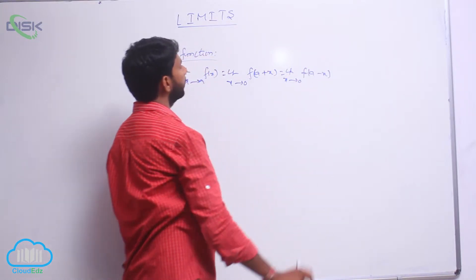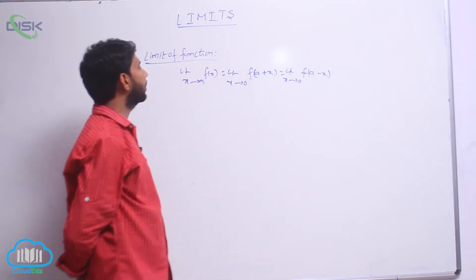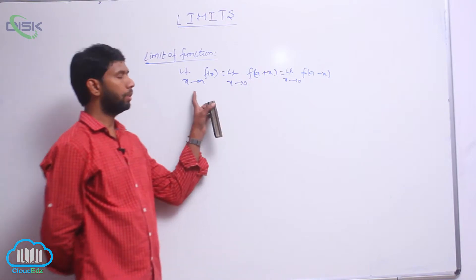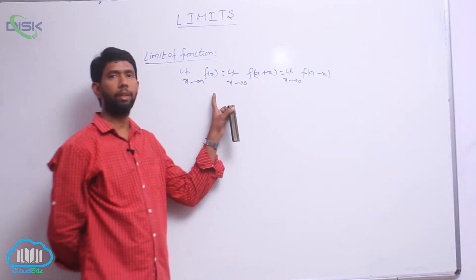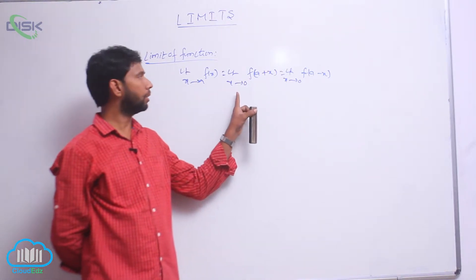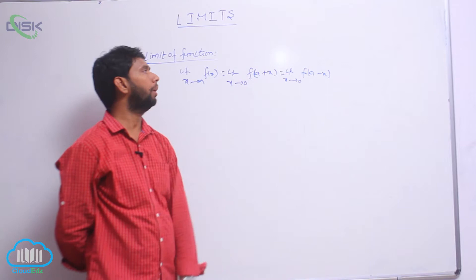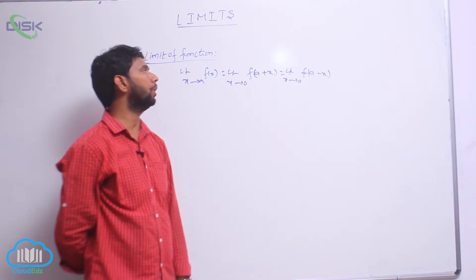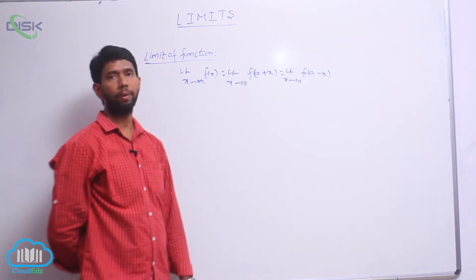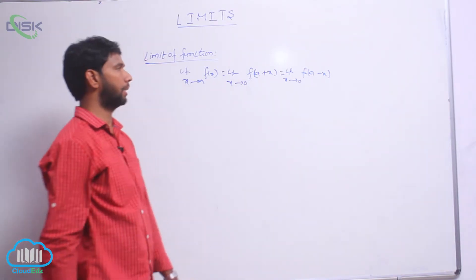Limit x tends to 0 of f(x) is equal to limit x tends to a of f(x), which is equal to limit x tends to 0 of f(a plus x), equal to limit x tends to 0 of f(a minus x).